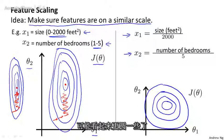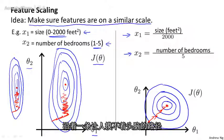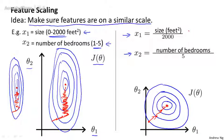And if you run gradient descent on a cost function like this, you can show mathematically you can find a much more direct path to the global minimum, rather than taking a much more convoluted path where it's trying to follow a much more complicated trajectory to get to the global minimum.